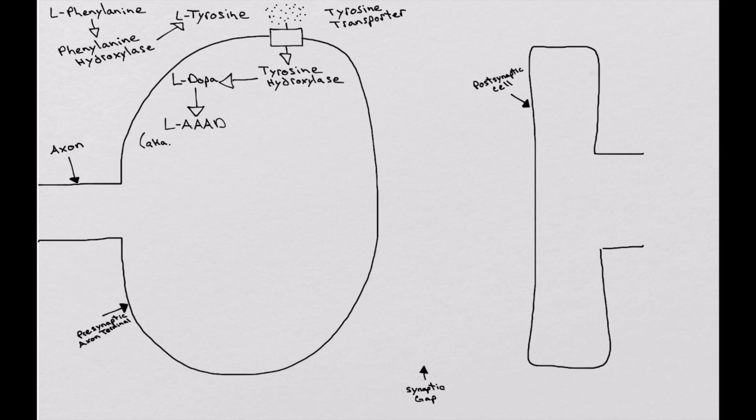L-DOPA is broken down by the aromatic amino acid decarboxylase into dopamine. This is where the noradrenergic, adrenergic, and dopaminergic cells are all pretty much the same as long as this transport process comes along.